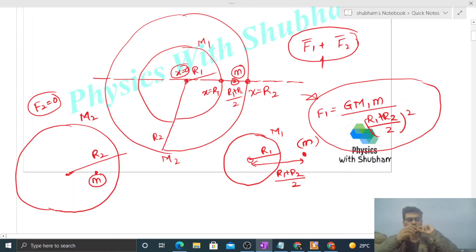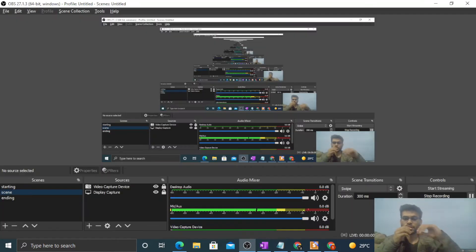So the net force is simply F1 and the direction is directly towards the center. I think you have understood. Let me know if you still have any confusion, we can discuss further. Okay, keep working hard, best of luck, bye.